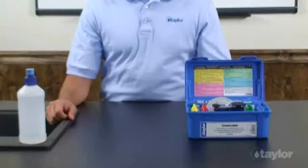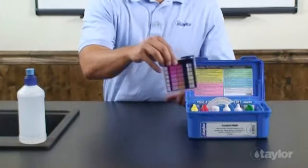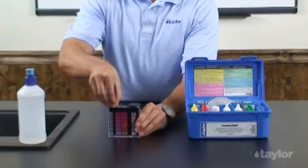To test total bromine, rinse and fill the small comparator tube to the 9 mL mark with the water to be tested.